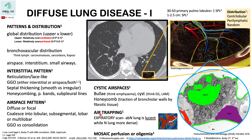Air trapping is a finding where the abnormal lung appears more lucent while the normal lung is more dense. Air trapping can be seen on inspiratory scans but is more accentuated on expiratory scans. Another pattern is mosaic perfusion or oligemia, which we will discuss shortly.